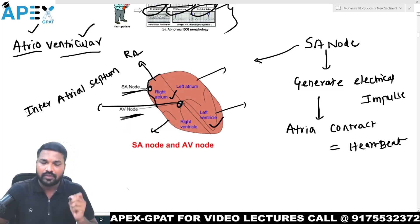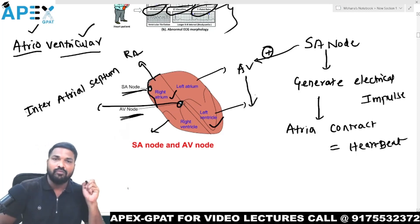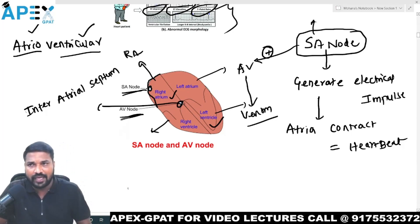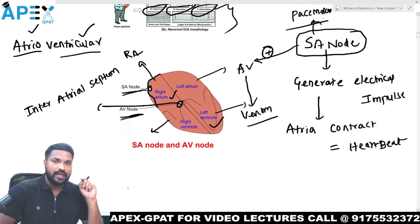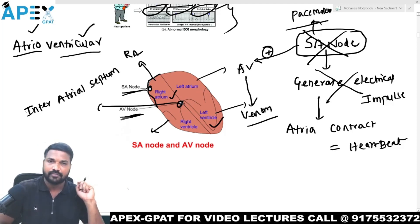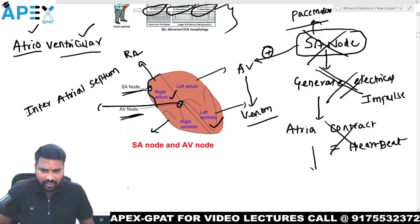Whenever the SA node stimulates the AV node, the AV node then stimulates the ventricles, and blood conduction occurs. The SA node is called the pacemaker. If there is any malfunction in the SA node, there is no electrical impulse generation, which means there is no contraction of the atria and ventricles.